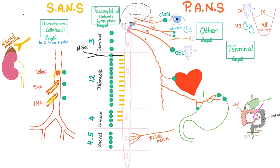Epinephrine comes from your adrenal medulla. You reach her basically by coming from the thoracic area. Do not relay in any ganglia — do not relay. Just continue until you reach your adrenal medulla.